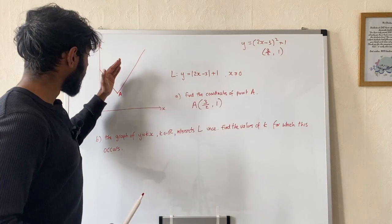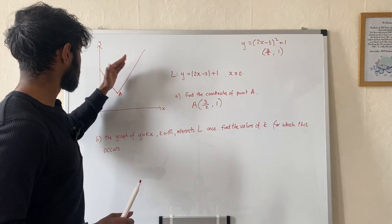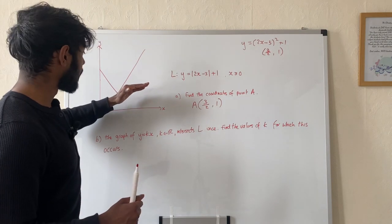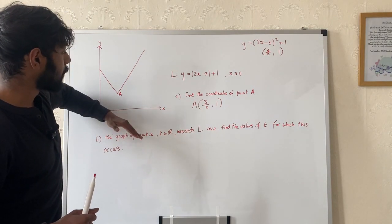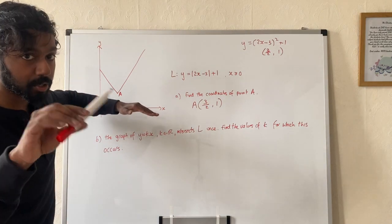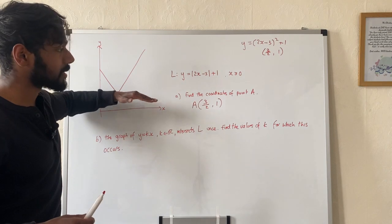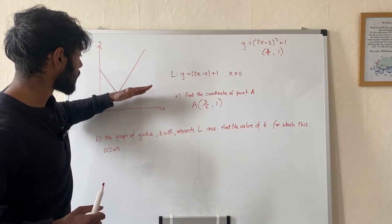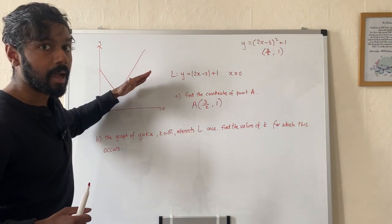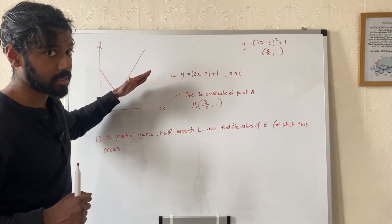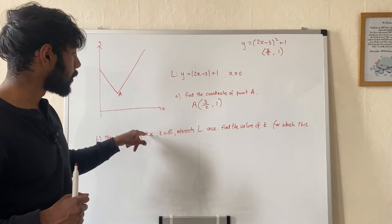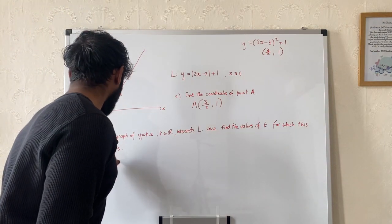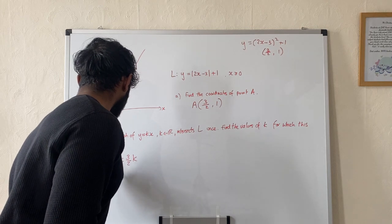As k changes, the line is going to rotate — it's going to move like this, go like this, and so on. I'm trying to figure out when I get one point of intersection. In the exam, I'd recommend using your pen or ruler and just keep moving it to see where there's going to be one point of intersection. Currently there are no points of intersection, and as I keep going, I notice that when I go through this vertex point, point A, I have one point of intersection. So I'm going to consider plugging in (3/2, 1) into y equals kx to work out the value of k. I get 1 equals (3/2)k, and that gives me k equals 2/3. So that's situation 1 — when the line goes through point A.